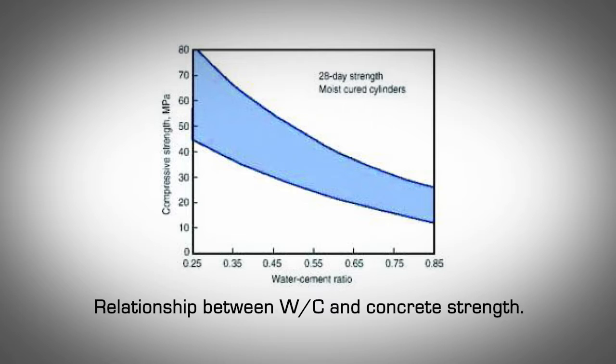Quality of the concrete mix – Water-cement ratio. The most important factor which determines the quality of a concrete mix is the quantity of water used versus the quantity of cement used by weight, also known as the water-cement ratio. Water is a critical ingredient in the cement paste. It causes the hardening of concrete through a process called hydration — a chemical reaction in which the major compounds in cement form chemical bonds with water molecules and become hydrates or hydration products. This causes the paste to harden and binds the concrete ingredients together.